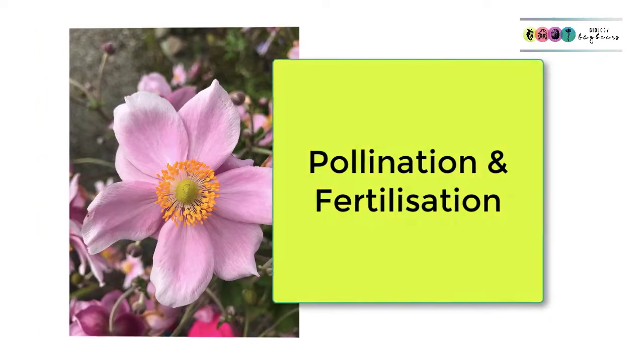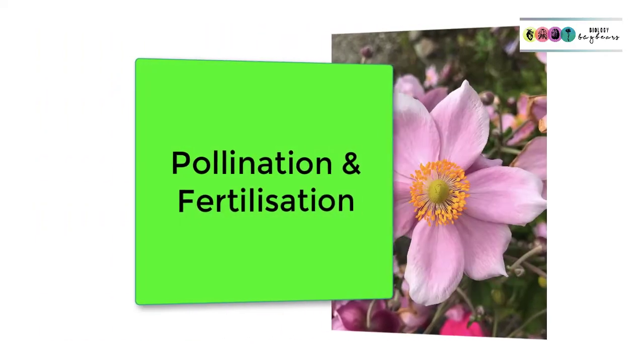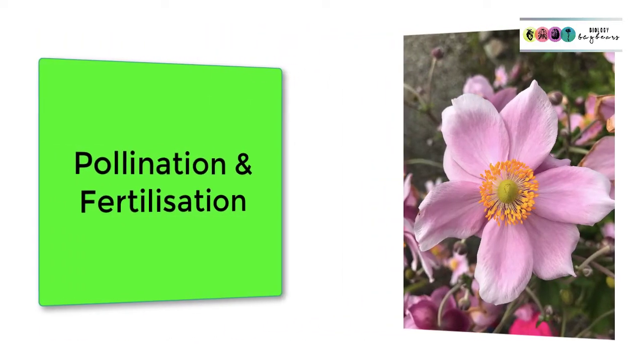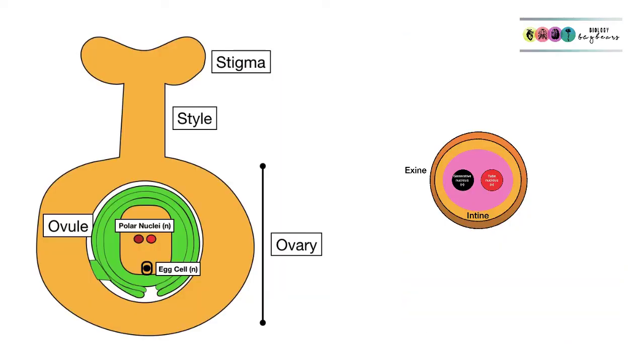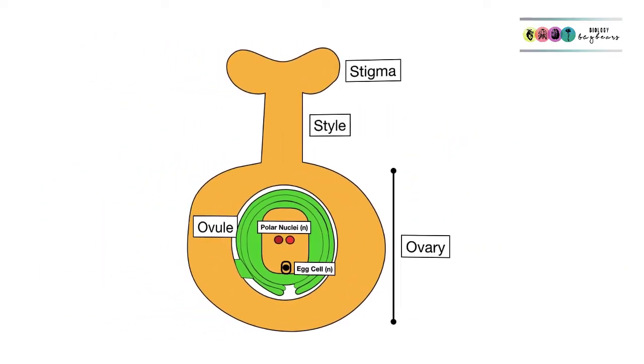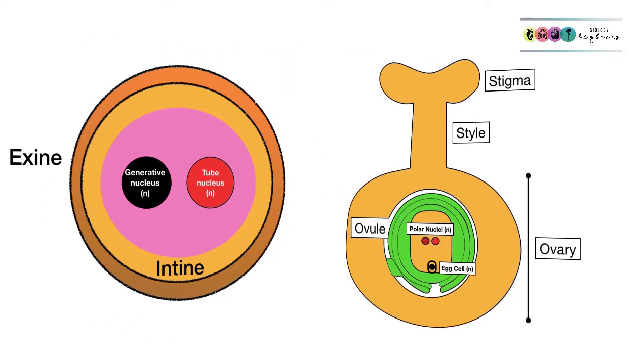This is video number three on the topic of sexual reproduction in plants, covering pollination and fertilisation. Now you know the detailed structure of the flower, how the pollen grain was formed, and how the embryo sac was produced, including how it produced the egg cell and the polar nuclei.